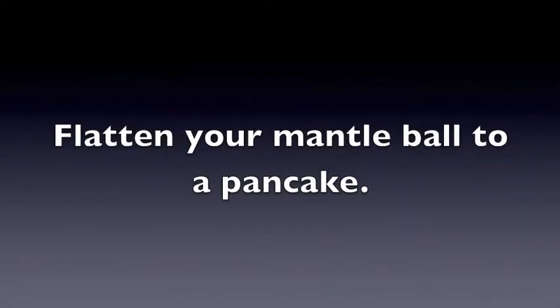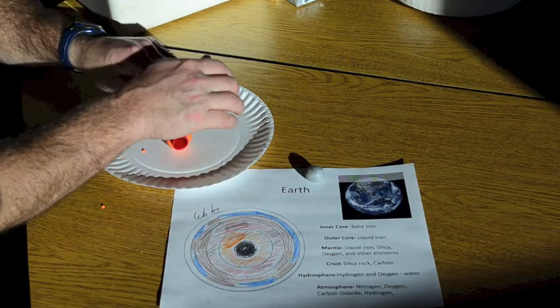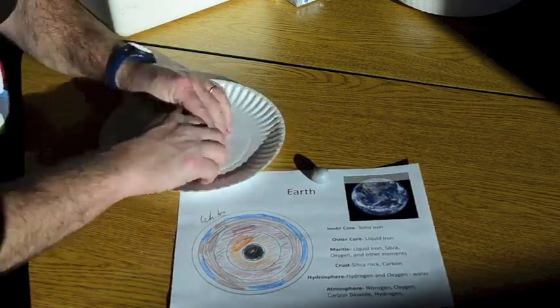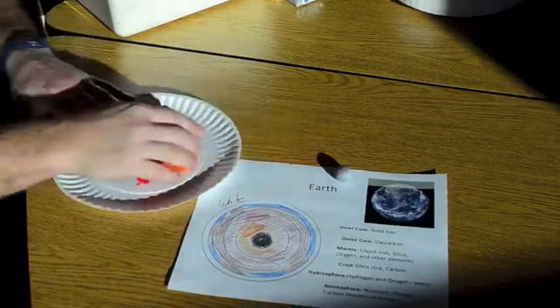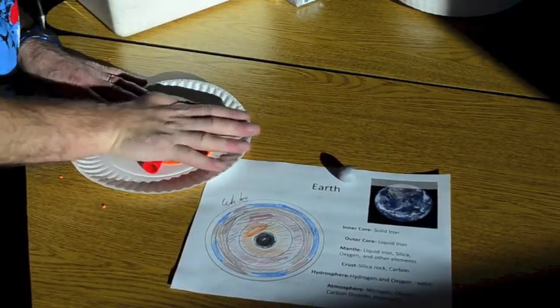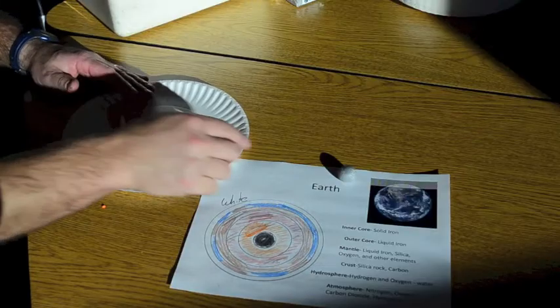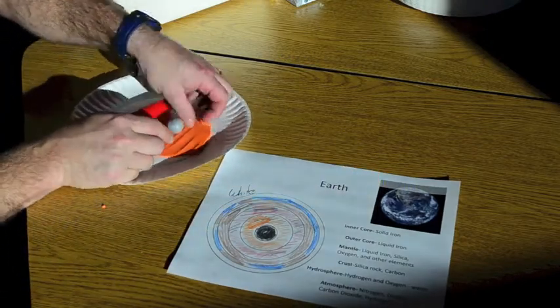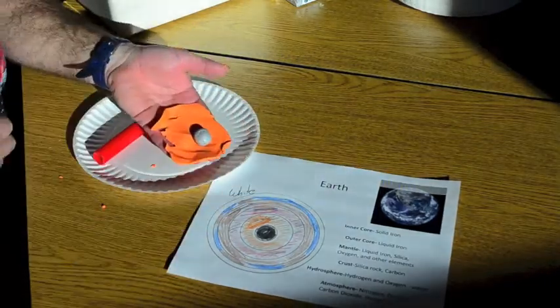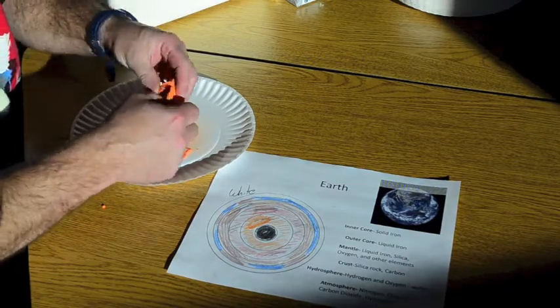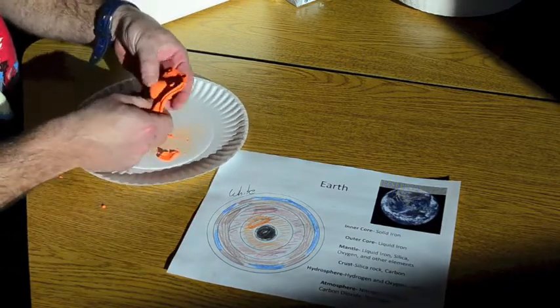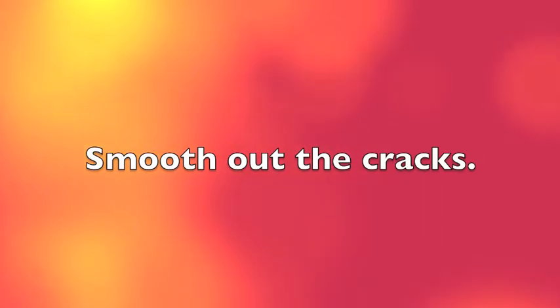Flatten your mantle ball into a pancake. Carefully wrap your mantle pancake around your ball core. Use a plastic knife or your fingernails to carefully pinch off the extra clay. Smooth out any cracks.